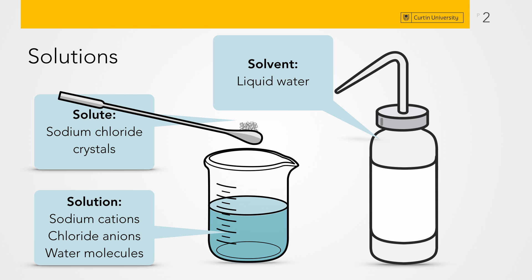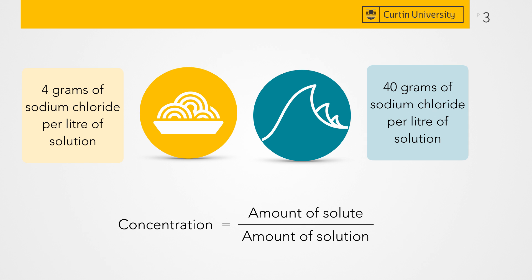In this example we have a sodium chloride solution formed from solid sodium chloride crystals, which is our solute. We dissolve this up in our solvent, which is liquid water. Together this forms a solution containing sodium cations, chloride anions and water molecules. In a solution we define solute, solvent and solution to describe the different species present at each stage of the process to form a solution.